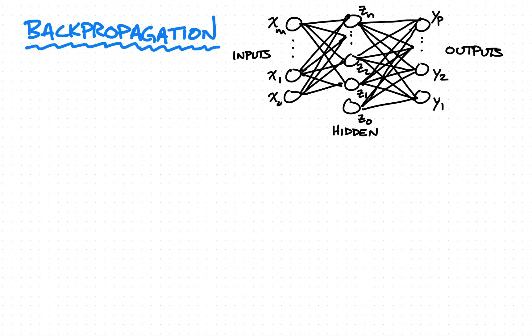Notice in this network we have M inputs, N hidden neurons, and P outputs. We start the indexing from zero on the inputs and the hidden layer because those need a bias neuron. Those bottom neurons are the bias. We don't have a bias on the output, that's why we start counting from one.